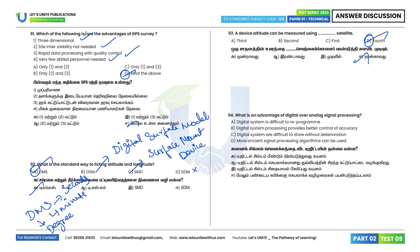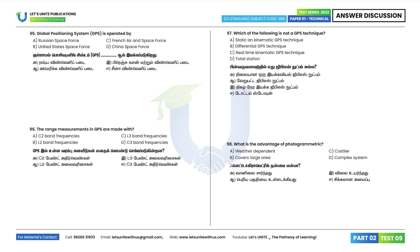Question 94: What is an advantage of digital over analog signal processing? Digital signal processing provides better control of accuracy. Option B is the correct answer. Question 95: The Global Positioning System is operated by the United States Space Force. Option B is the correct answer.